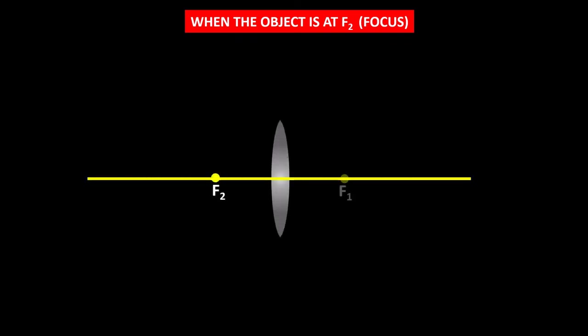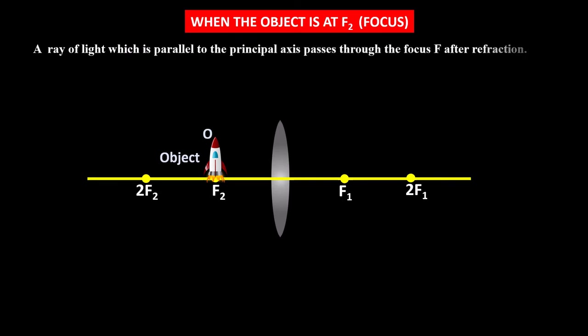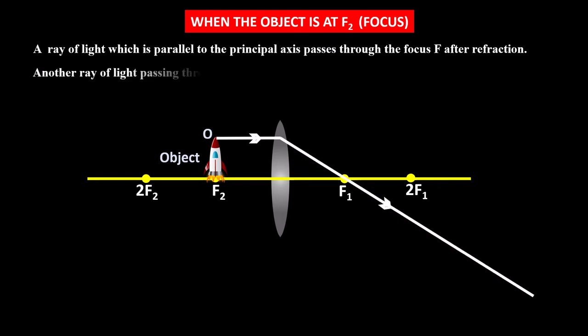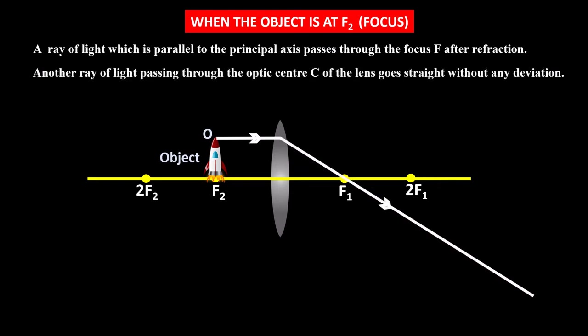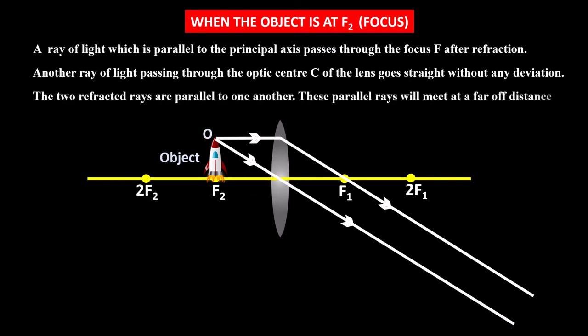Now let us move to the case when the object is at f2, the focus. Let this be the lens and principal axis with the points on the principal axis. The object is placed at f2. A ray of light parallel to the principal axis passes through the focus after refraction. Another ray passing through the optic center C of the lens goes straight without any deviation. The two refracted rays are parallel to one another, and these parallel rays will meet at a far distance to form an image at infinity.